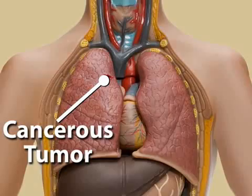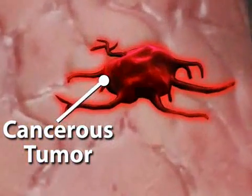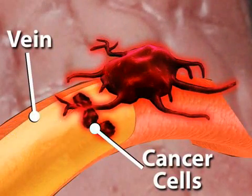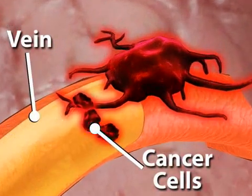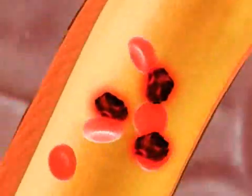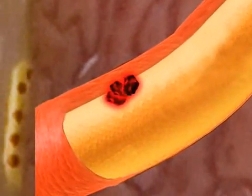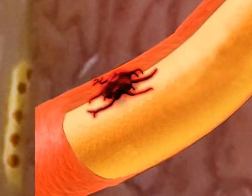This means that the body unwittingly provides the nutrients and oxygen that a tumor needs to grow. Cancer becomes more serious when cells break away from a malignant tumor and metastasize, or spread through the bloodstream or lymphatic system to either adjacent or distant organs.